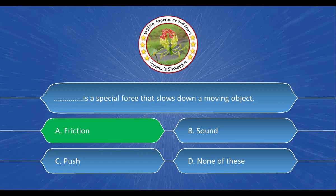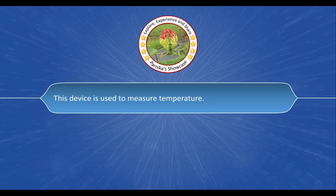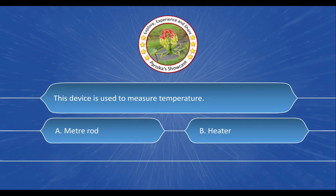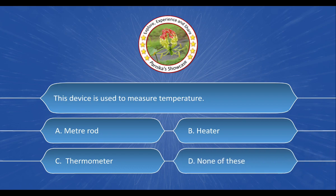Next question is, this device is used to measure temperature. And the options are A. Meter rod, B. Heater, C. Thermometer, D. None of these. And the correct answer is option C, Thermometer.